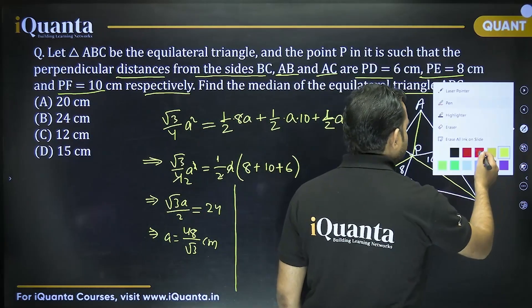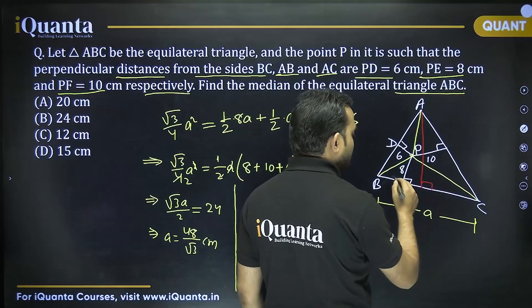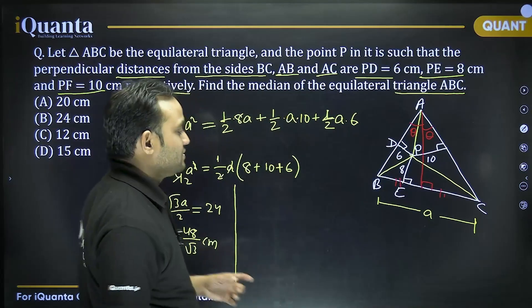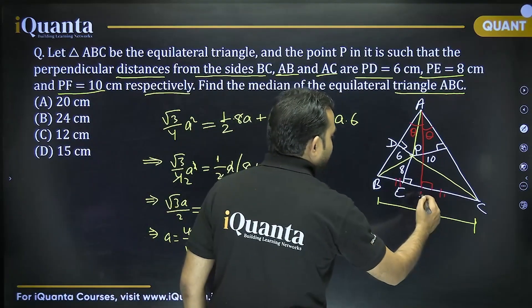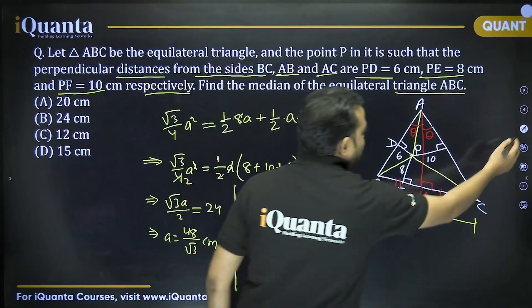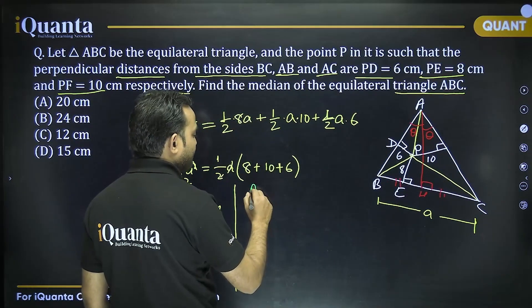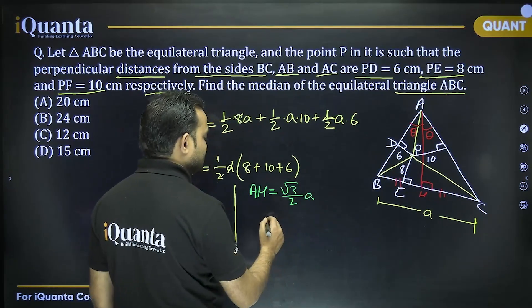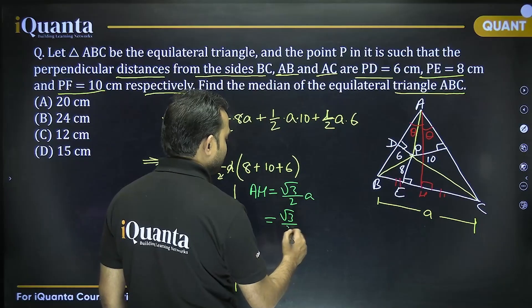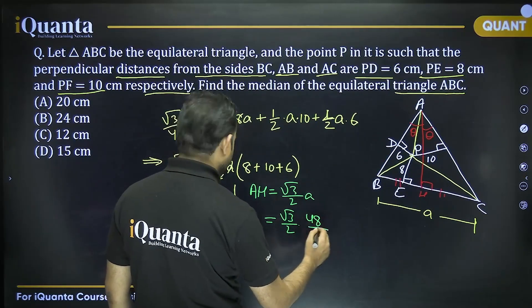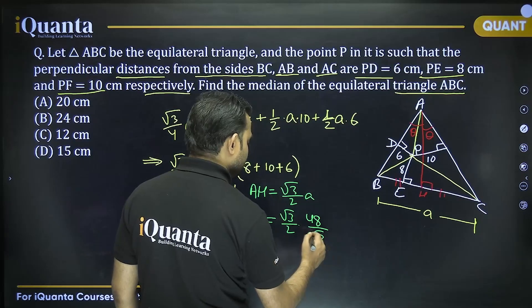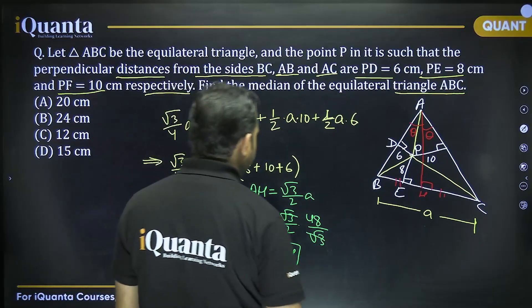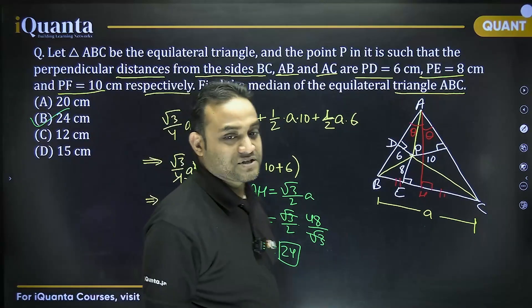The altitude (which equals the median) of an equilateral triangle is (√3/2)a. Substituting a = 48/√3: altitude = (√3/2) × (48/√3) = 48/2 = 24 cm. Hence option B is the answer.